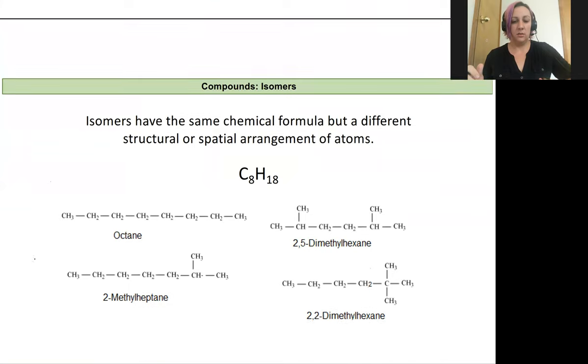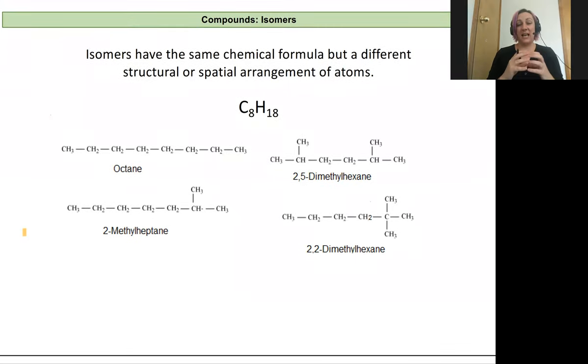Within compounds, two things that have the same chemical formula might actually be totally different molecules, and these we call isomers. These are the same number of atoms in the same proportions but arranged differently relative to one another. When they're arranged differently in space, they're going to have different properties.